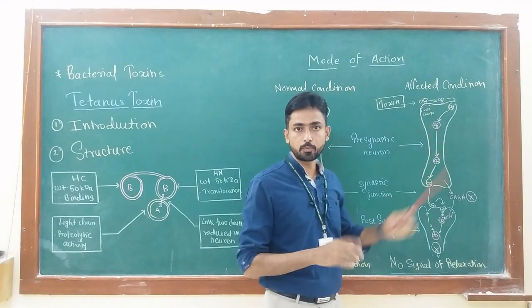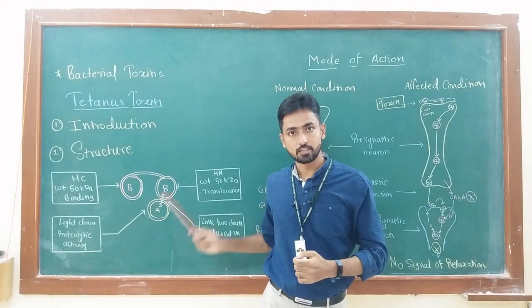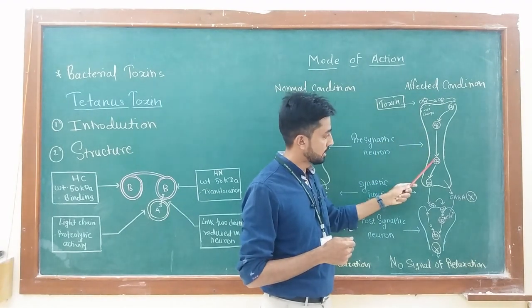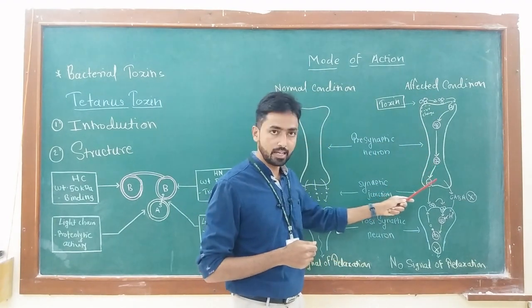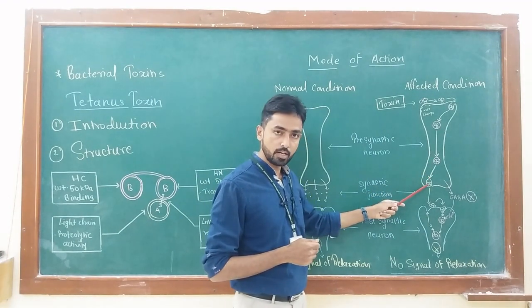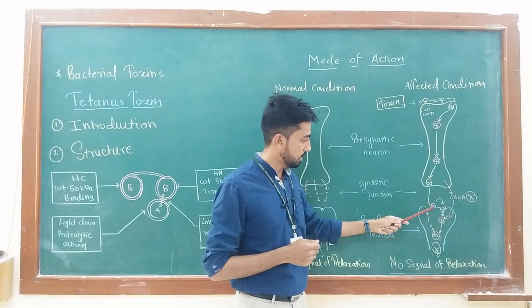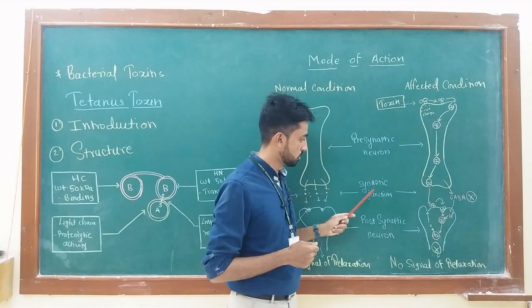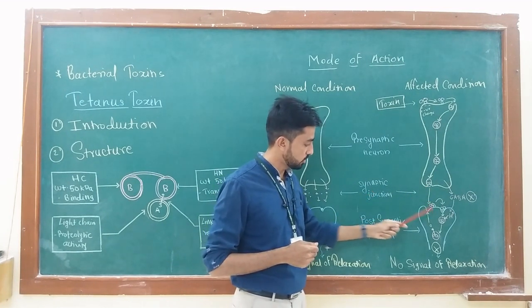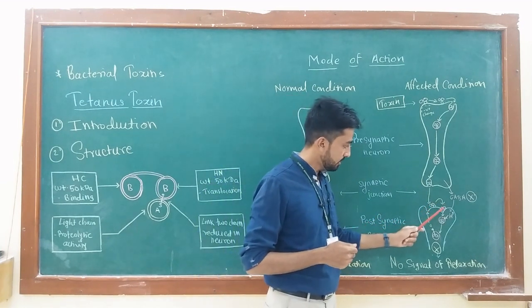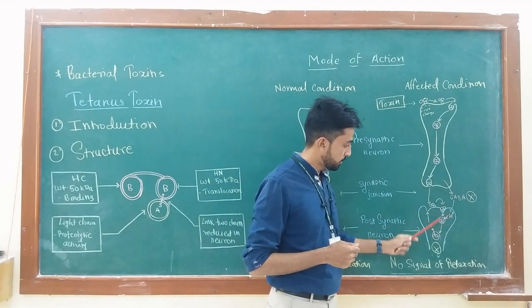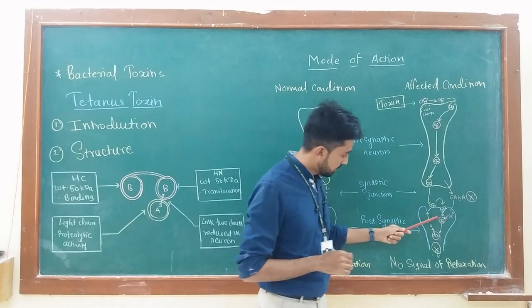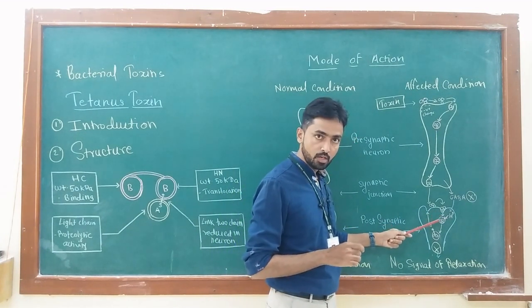Due to this process, the toxin gains entry into the neuron and a vesicle is produced called an endosome. The endosome contains both subunits of the toxin, that means B subunit and A subunit. Now this endosome migrates into the presynaptic neurons, and then when they reach the end of the neuron, the toxin comes out from the endosome and then travels and gets attached to the postsynaptic neuron. This transport is carried out through synaptic junctions. When this toxin binds to the postsynaptic neuron, it again gains entry into the postsynaptic neuron by the same process, that is receptor-mediated endocytosis.